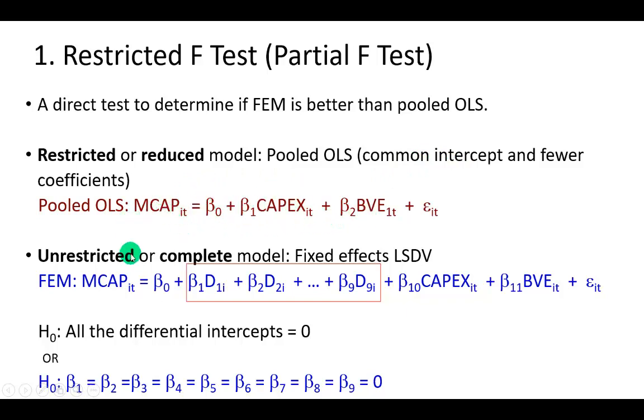The unrestricted or complete model is going to be the fixed effects least squares dummy variable model, where as a result of the introduction of the dummy variables, we're going to have 10 different coefficients with respect to the dummies.